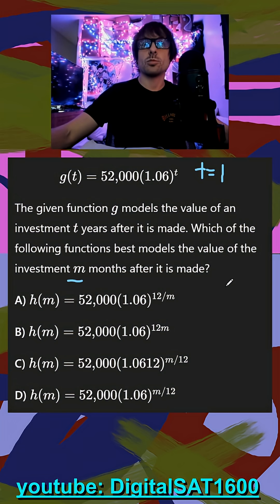So again, when t is 1, our m should be equal to 12, and both of these should increase our 52,000 by 6%.